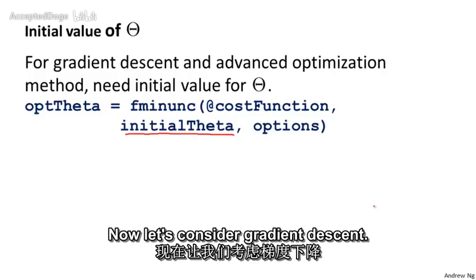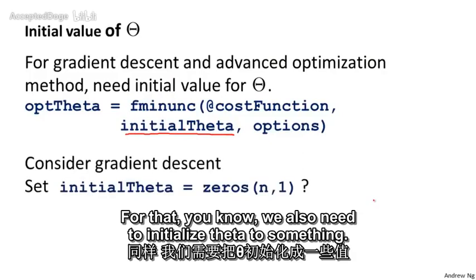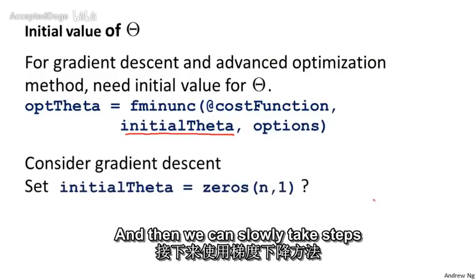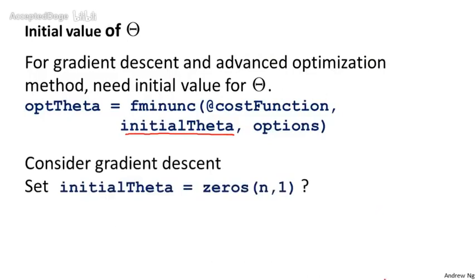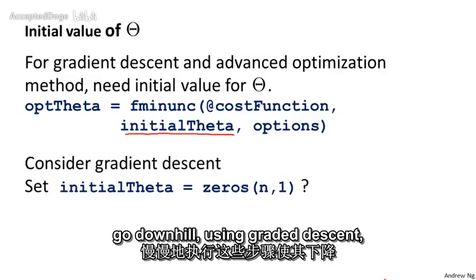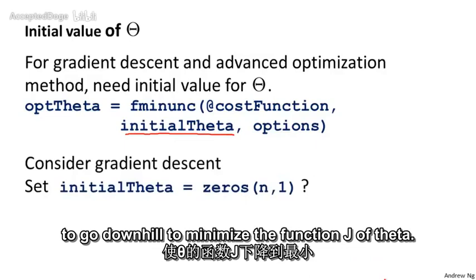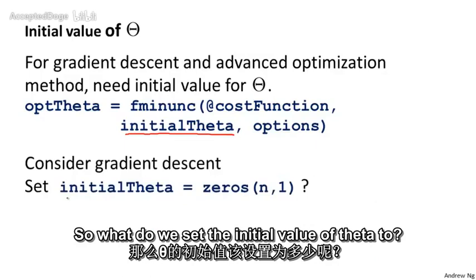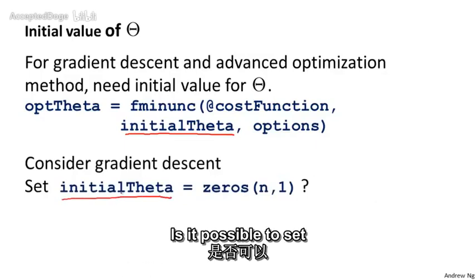Let's consider gradient descent. We also need to initialize theta to something, and then we can slowly take steps that go downhill using gradient descent to minimize the function J of theta. So what can we set the initial value of theta to?